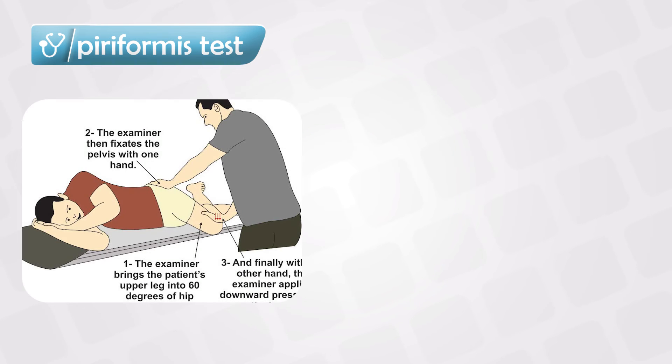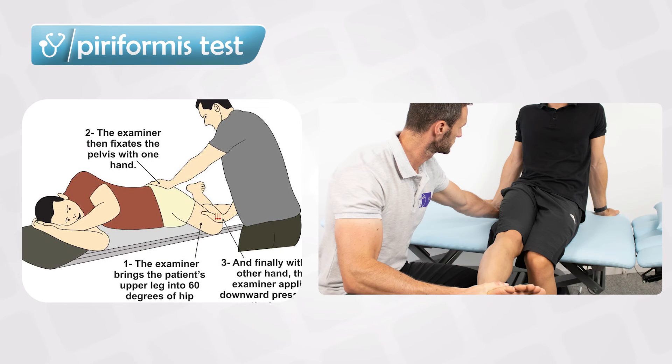To test for this syndrome, we perform the piriformis test. The test can be performed in two ways: either with the patient lying on their side or sitting up. In either case, if moving the affected limb triggers pain in the patient's leg, this is considered a positive test.